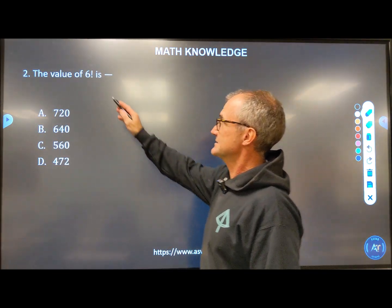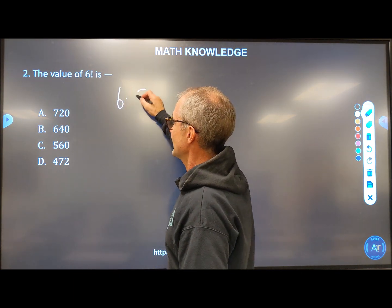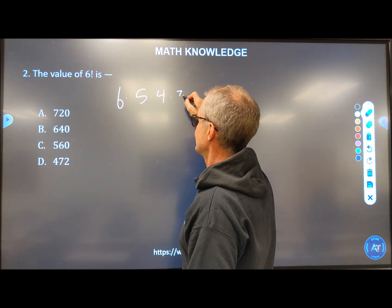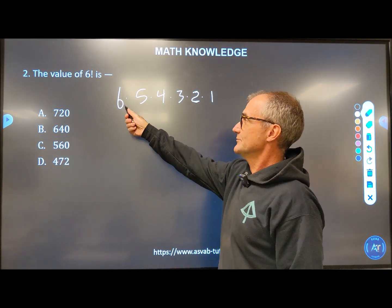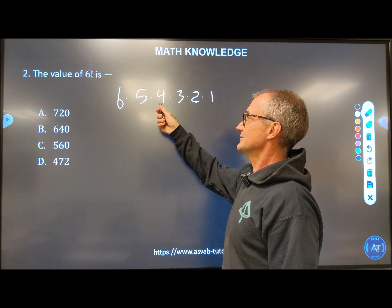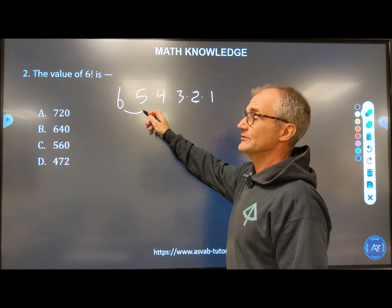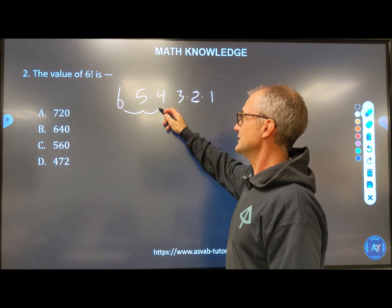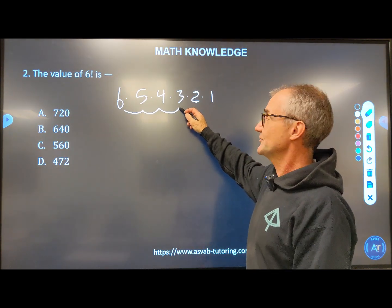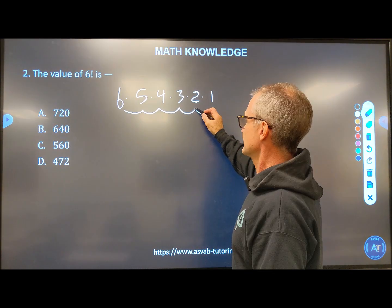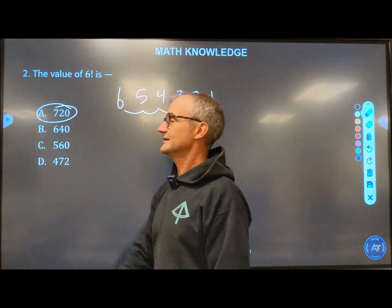Number two, right here, six factorial. That does not mean six. It means six times five times four times three times two times one. And you're going to do that for whatever number it is. Multiply it by the next number down by one each time. So six times five is 30, 30 times four, 120, 120 times three, 360, 360 times two, 720 times one, 720. There's my answer right there, answer A.